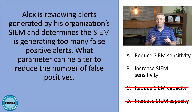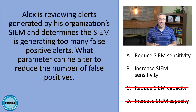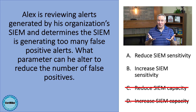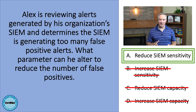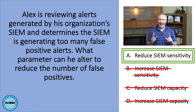If he increased the sensitivity of the SIEM, that would reduce the threshold for an alert. But reducing the threshold would increase rather than decrease the number of false positives, so we can eliminate that answer as well. That leaves us with decreasing the sensitivity of the SIEM. That would increase the threshold for an alert, and decrease the number of false positives.